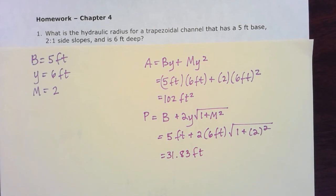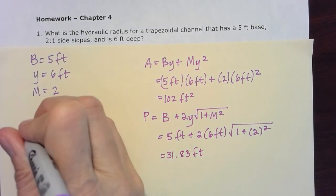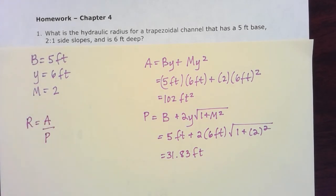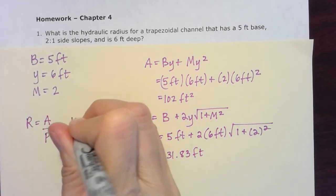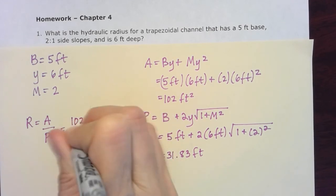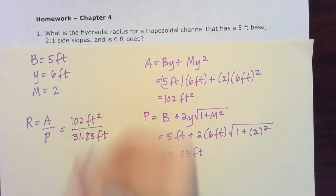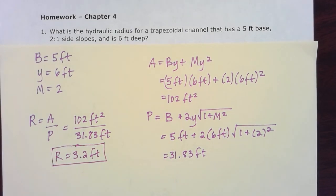Once I've gotten that far, all I need to do to find that hydraulic radius is to take that area and divide it by the wetted perimeter. So in this case, it's 102 square feet and I'm gonna divide it by this 31.83 feet. When I do that math, I wind up with a hydraulic radius to one decimal place of 3.2 feet. And that is my final answer for homework problem from chapter four, number one.